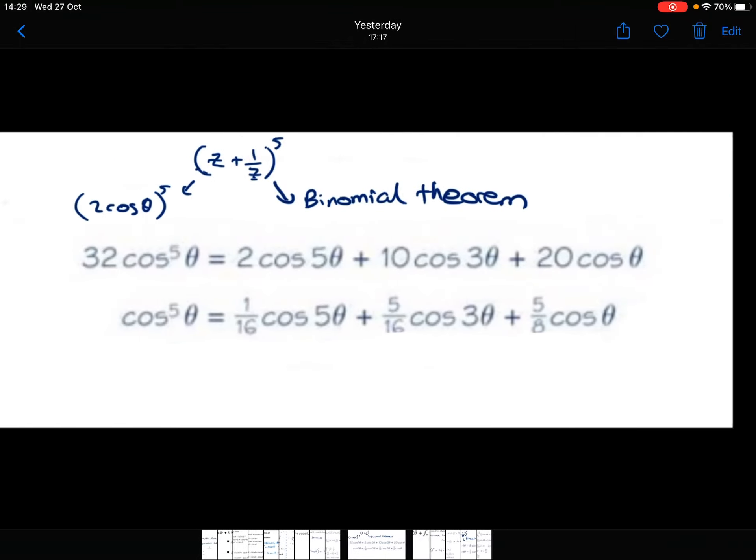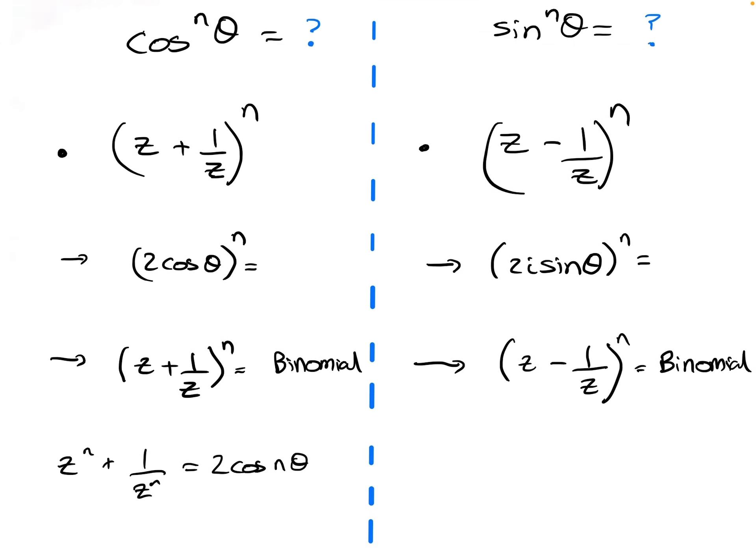To summarise: to prove identities for cos theta to the power n or sine theta to the power n, consider z plus 1 over z for cos, or z minus 1 over z for sine. Replace z plus 1 over z with 2 cos theta, or z minus 1 over z with 2i sine theta. Then expand using the binomial theorem, group like terms, apply the 2 cos n theta identity, and set the two expressions equal to one another.